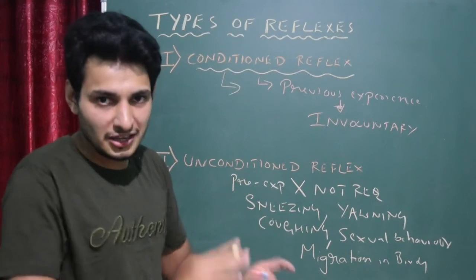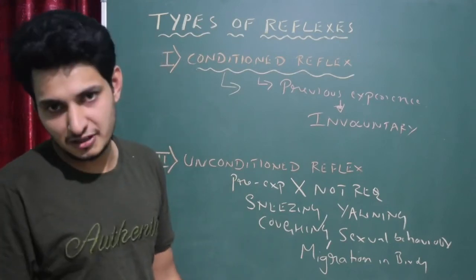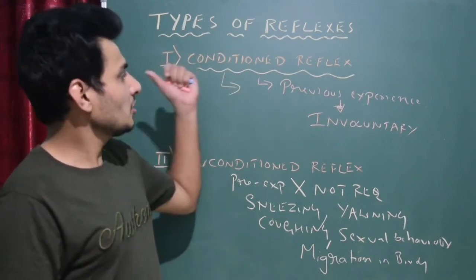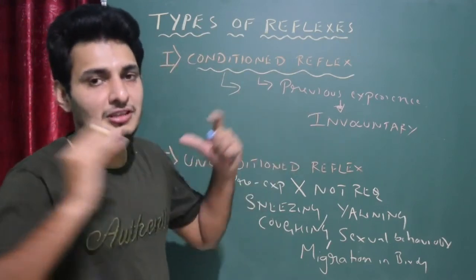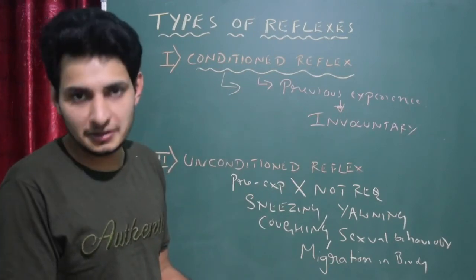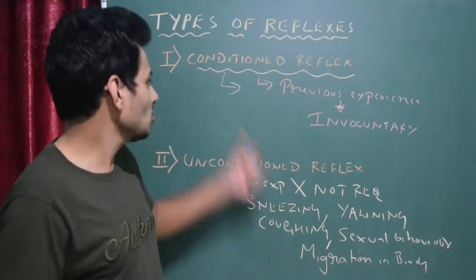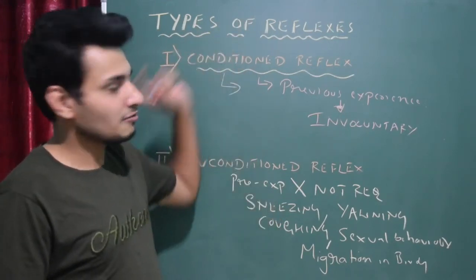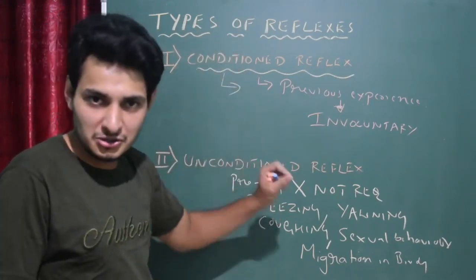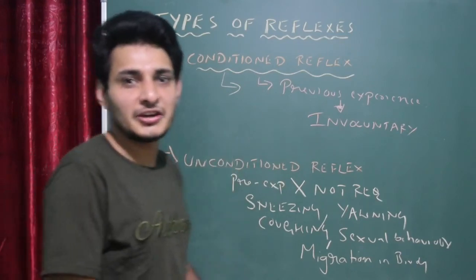Unconditioned reflexes are automatic and inborn, whereas conditioned reflexes require experience and learning. So those are the two types of reflexes. Once you become a master in a particular activity, everything occurs involuntarily. That's all for this session on the types of reflexes — hope you understood. Thank you.